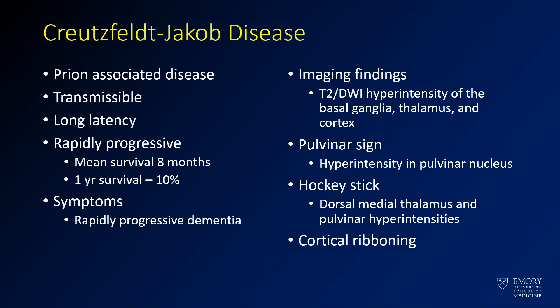The imaging findings that you'll see — we'll review them a bit more in just a second — but you typically have T2 and diffusion abnormality in the basal ganglia, the thalamus, and you sometimes have a cortex abnormality where the cortex is hyper-intense, known as cortical ribboning. These associated signs — the pulvinar sign and the hockey stick — we'll take a closer look at with the images.